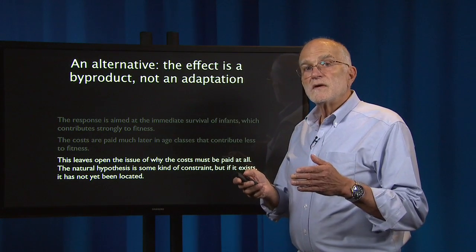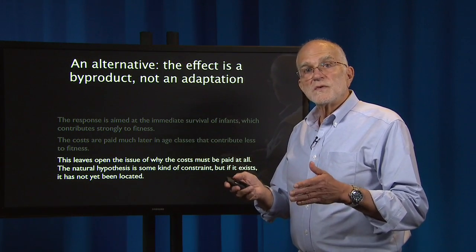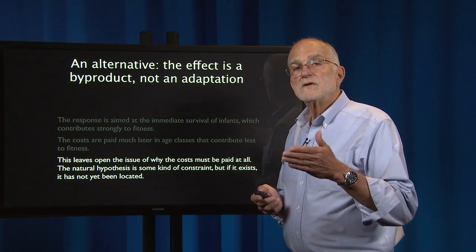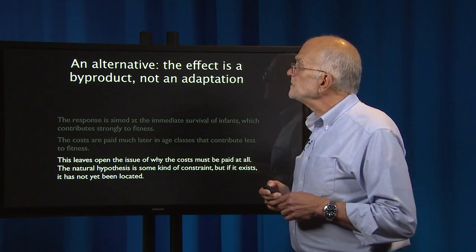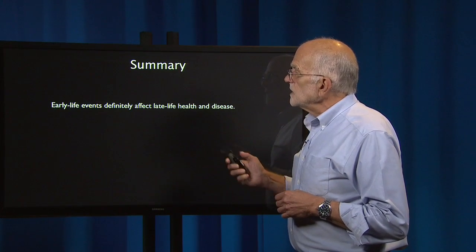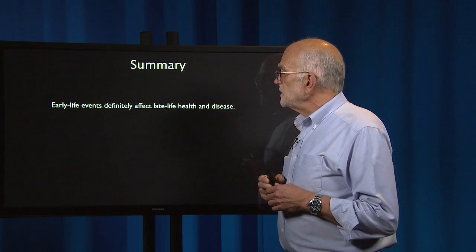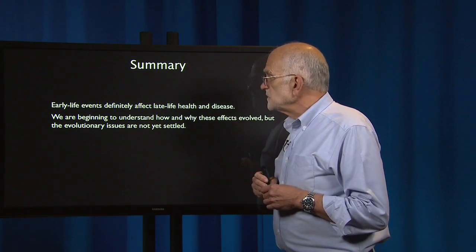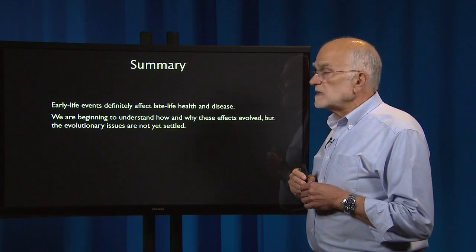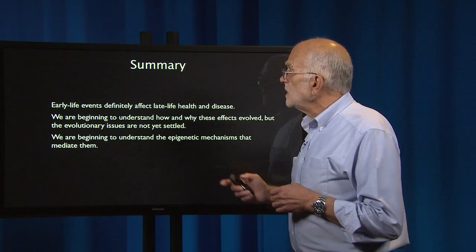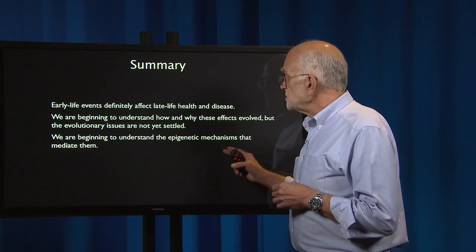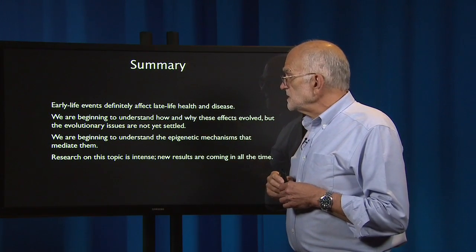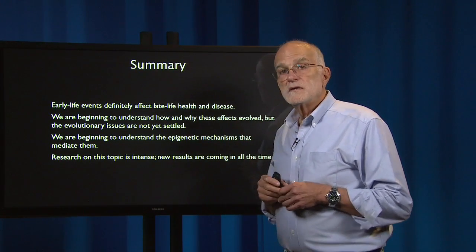So this is an area where we know the effects are real, the data are there, and there is an interesting controversy going on in terms of how we explain them. To summarize: early life events definitely affect late-life health and disease. We are beginning to understand how and why these effects evolved, but the evolutionary issues are not yet settled. We are beginning to understand the epigenetic mechanisms that might mediate them, and research on the topic is intense — new results are coming in all the time.